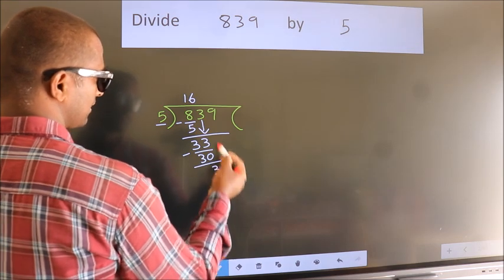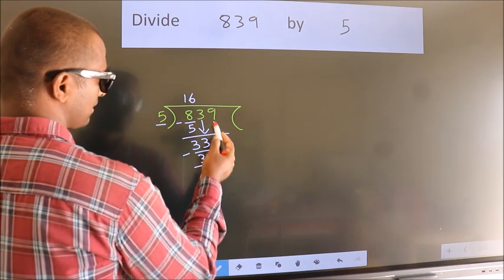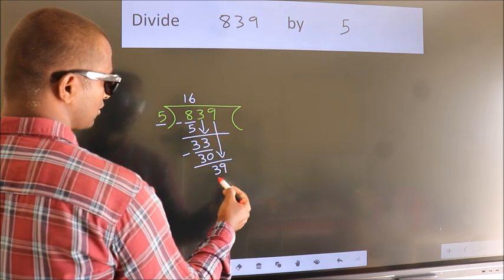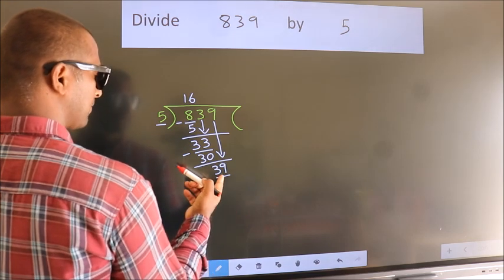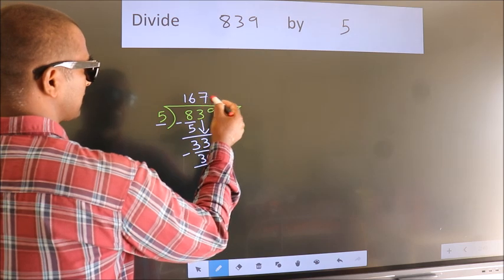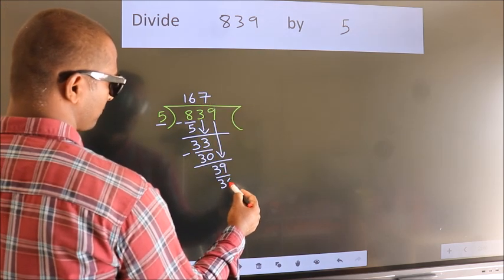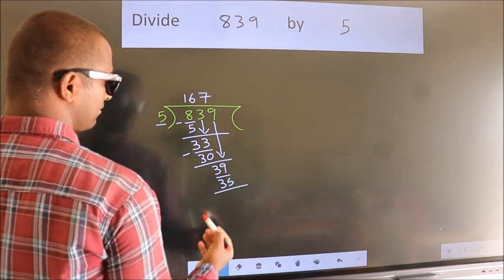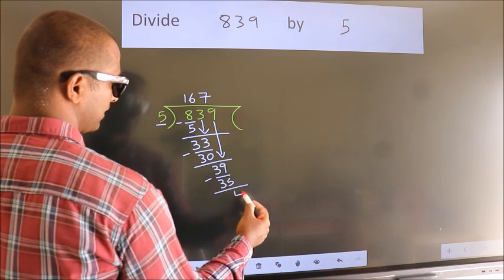After this, bring down the next number. 9 down, so 39. A number close to 39 in the 5 times table is 5 times 7, which is 35. Now we subtract and get 4.